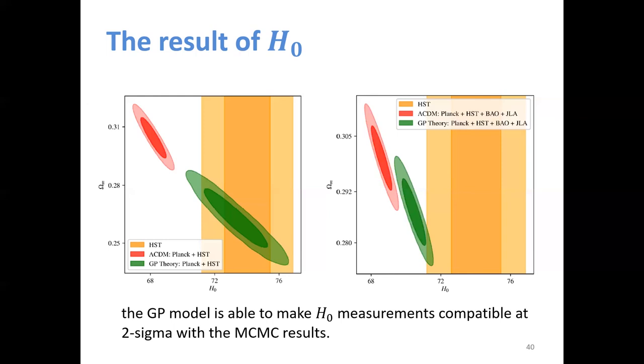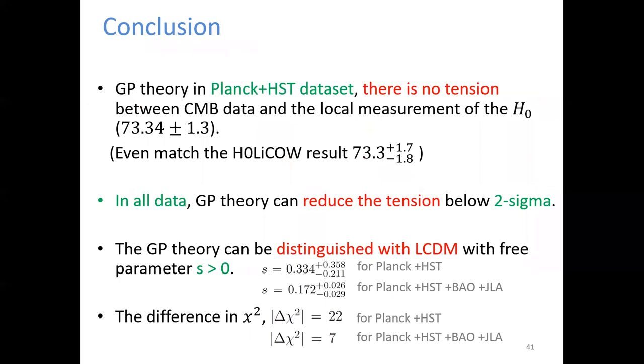Now we show the conclusion. Generalized Proca theory in Planck plus CMB dataset has no tension between CMB and H0 results, even matching the gravitational lensing result at 73. In all the data sites, generalized Proca theory can reduce the tension below 2 sigma. And the Proca theory can be distinguished with lambda CDM with free parameter S larger than zero. In the Planck plus HST data site, S equals 0.3. In all data sites, S equals 0.17. For the chi-square, we have a smaller chi-square than lambda CDM. And the difference of chi-square is equal to 22 in CMB plus HST and the difference chi-square is equal to 7 in all the data sites.